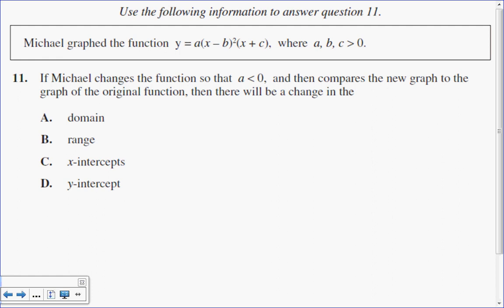Let's look at my original function a little bit closer. If I have x minus b squared and x plus c to the exponent of 1, I know that 2 plus 1 equals 3. The degree is 3. So I know that this is a cubic polynomial.